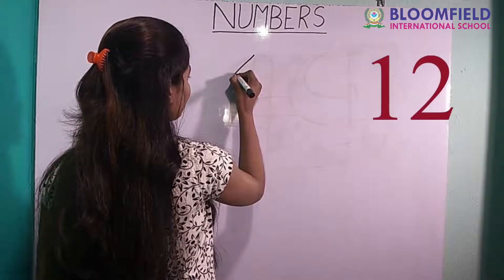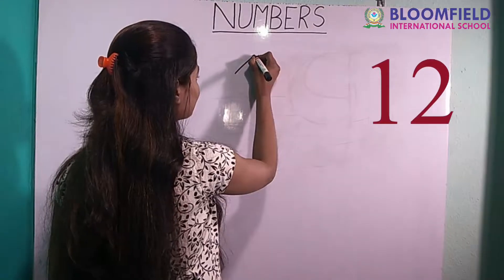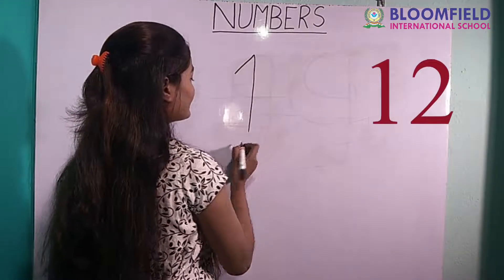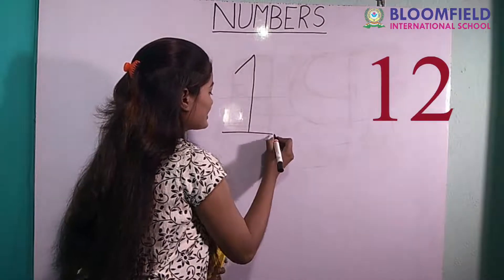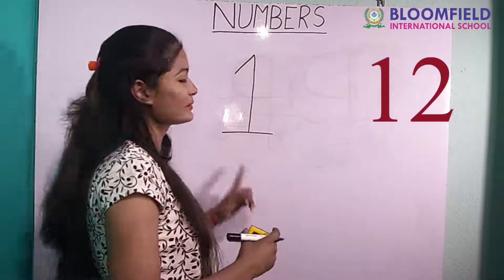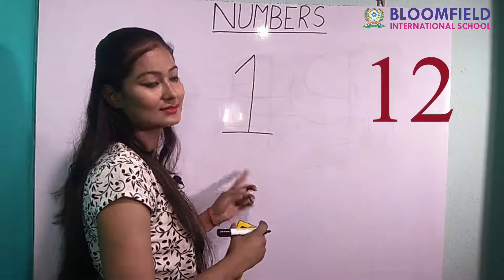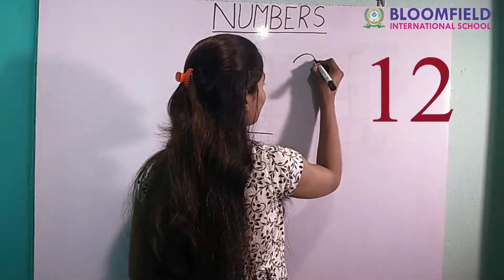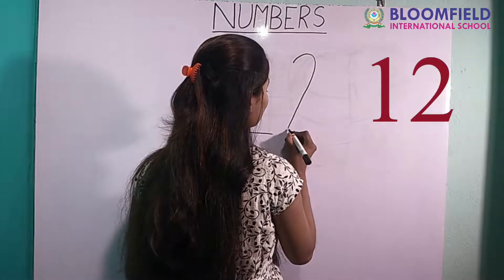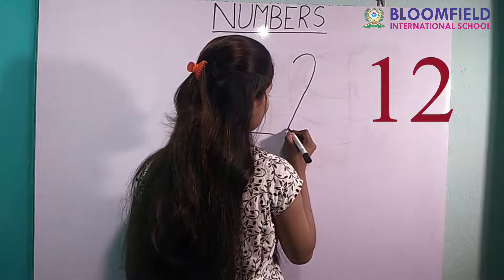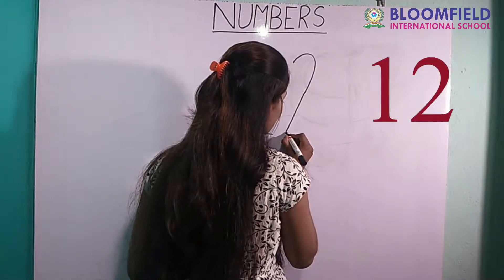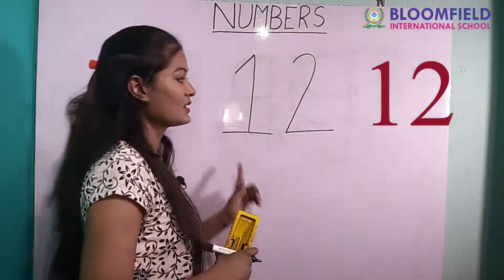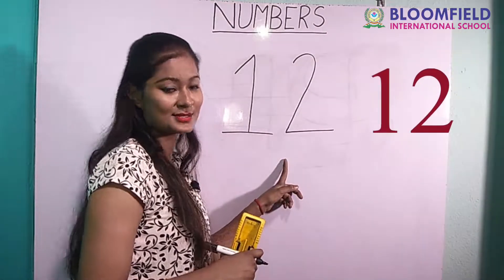Next: slanting line, slipping line, standing line, slipping line. One. Small curve, then slanting line, small slipping line. One two. Twelve.